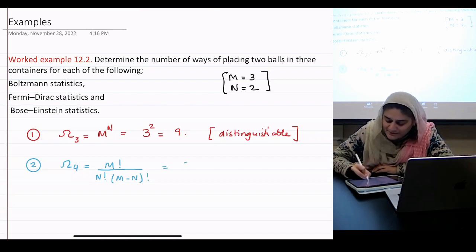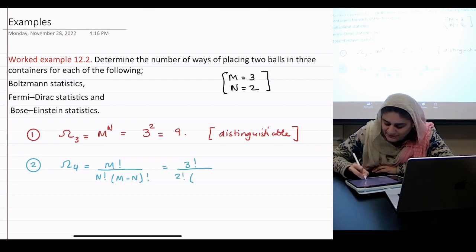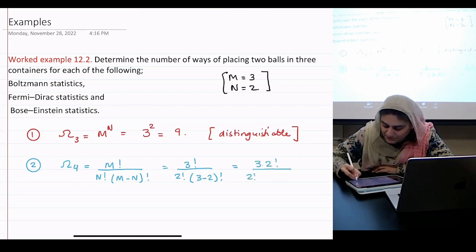So m is 3, n is 2, 3 minus 2. Oh sorry, that is 1. 3 factorial over 2 factorial, 2 factorial, 1. And the answer is 3.